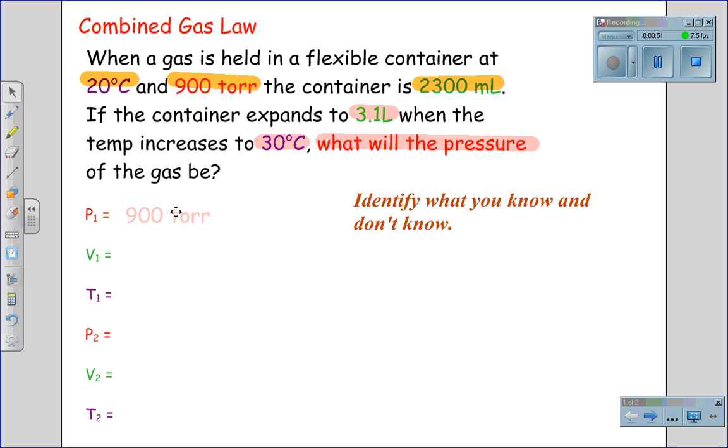Therefore, we identify each of the knowns. 900 torr is P1. 2,300 milliliters, which we convert to 2.3 liters, is our volume. And our temperature is 20 degrees Celsius, which we have to add 273 to to get the Kelvin temperature of 293.